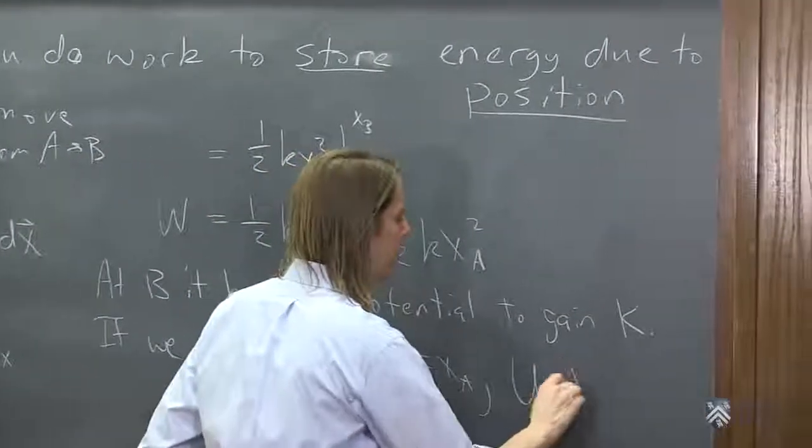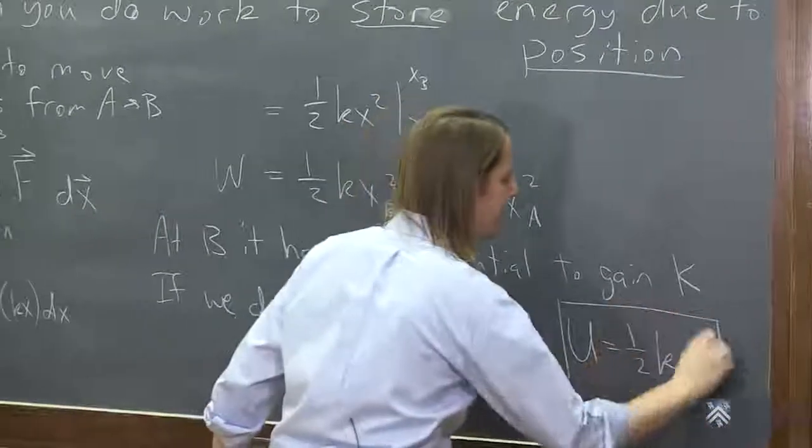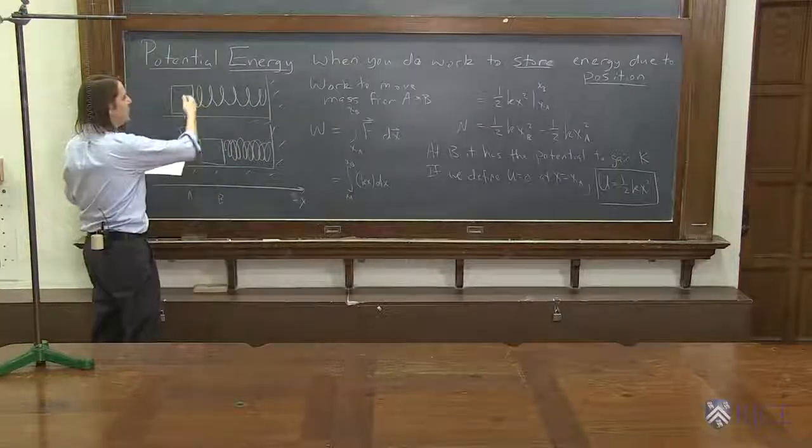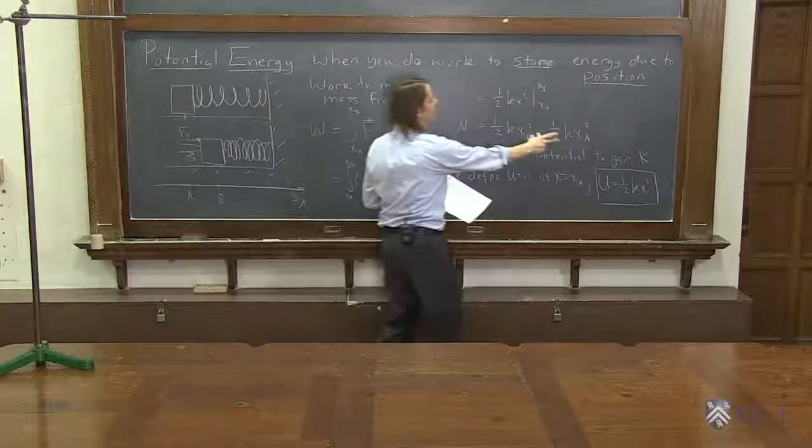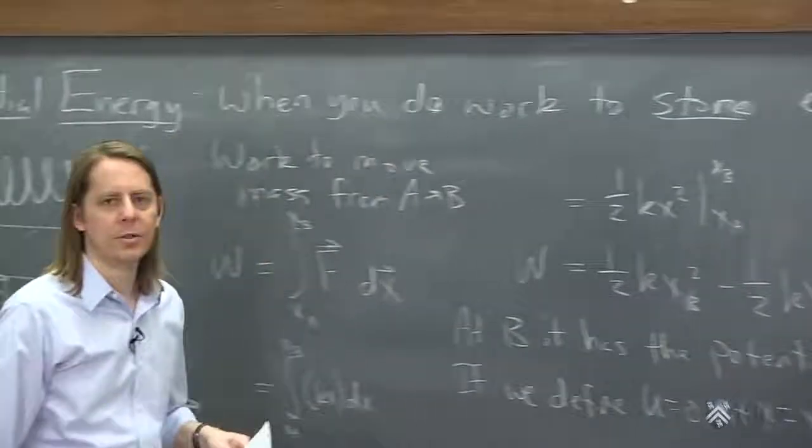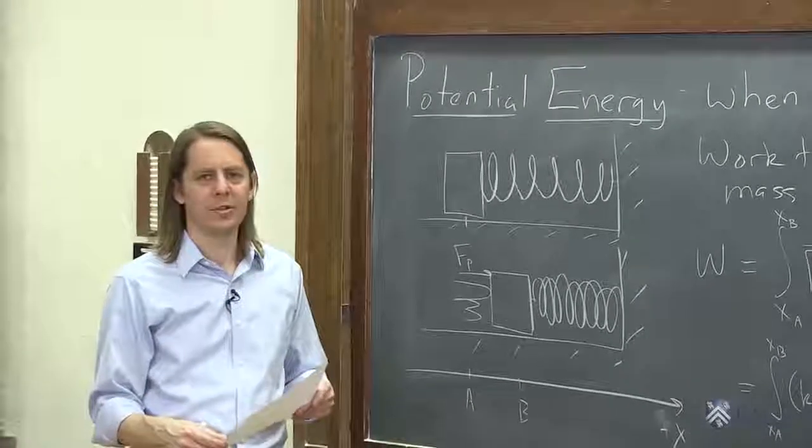Potential due to a spring is 1/2 kx squared, if you define the potential to be 0 where x is 0. If you want the potential difference between two positions, this would be the potential energy: 1/2 kx squared final minus 1/2 kx squared initial. So now we have a second potential to think about when we do conservation of energy problems.